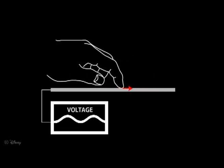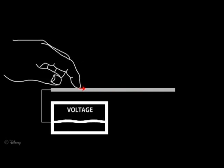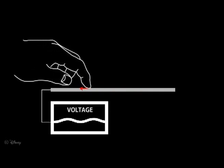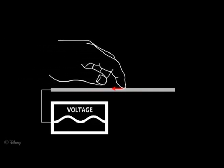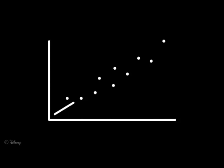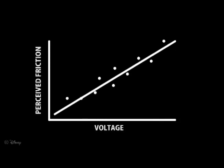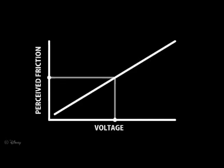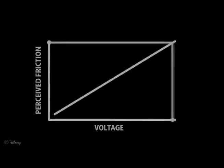Using an electrovibration-based display, we control this friction by modulating the applied voltage, achieving a frictional force proportional to the voltage. We determined a psychophysical model that relates the perceived frictional force to the applied voltage. Applying this model, we can calculate the precise voltage necessary to generate any desired frictional force between the user's finger and the surface.